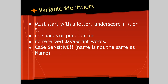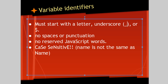Variable identifiers must start with a letter, underscore, or a dollar sign. There are no spaces or punctuation within the variable. You can't use a reserved JavaScript word, which we'll be getting into. And they're case sensitive — that means 'name' is not the same as 'Name' with a capital N. If you initialize this variable with this name, and then you want to use it later with this name, it's not going to work right and it's going to cause an error.